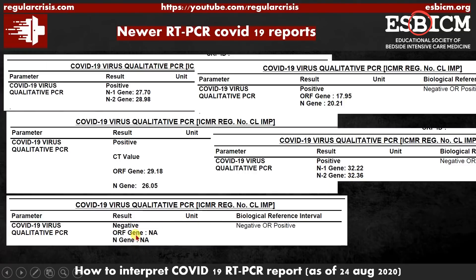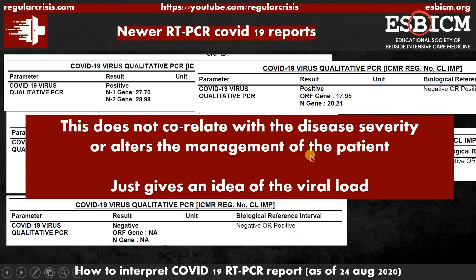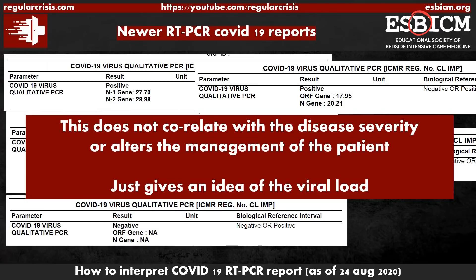This report is negative — they were not able to identify any of the genes. But one very important thing: this does not correlate with the DCCVT or alter the management of the patient. Viral load detection in this RT-PCR report has nothing to do with clinical severity — a patient may have a low viral load but still be sick due to comorbid conditions or late presentation. Your report can be negative, but the patient presented late and now has become negative while lung fibrosis is still present. These values just give an idea of the viral load. You can use them to monitor disease — if RT-PCR on day one and day nine are both positive but viral load is decreasing, the patient will become negative sooner or later.